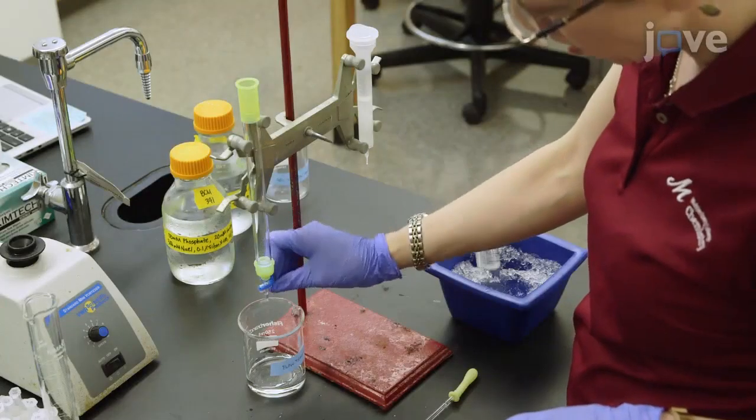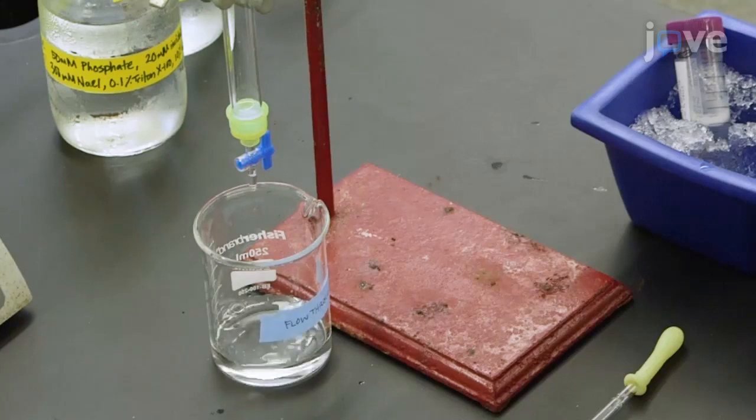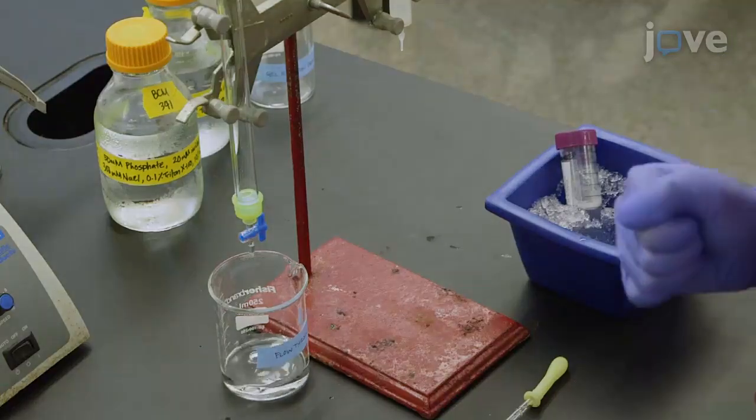To begin, prepare the nickel NTA column for the addition of the cell-free crude extracts by opening the stopcock and allowing the remaining lysis binding buffer to drain by gravity through the nickel NTA resin. When the buffer has drained completely.